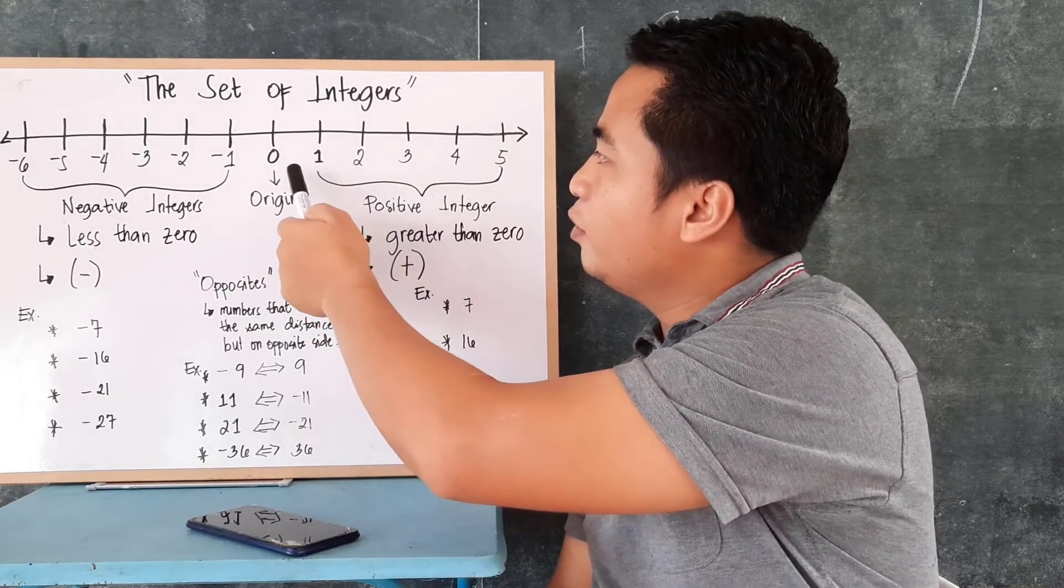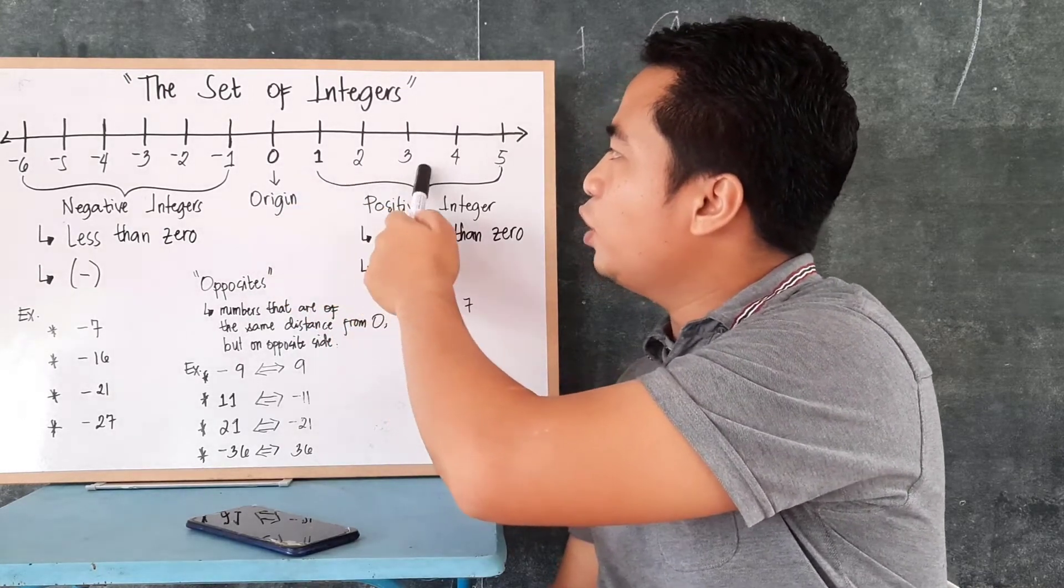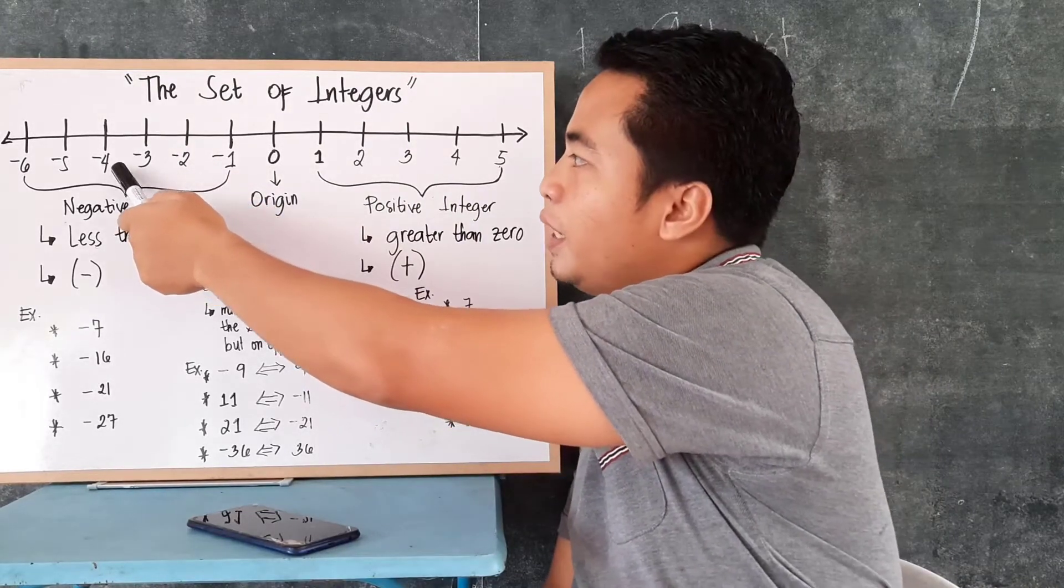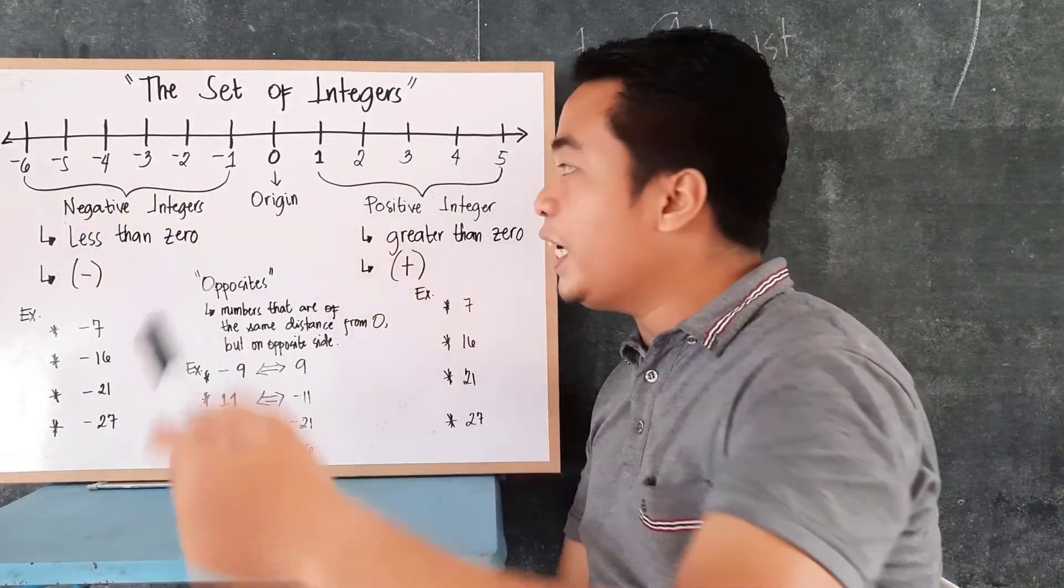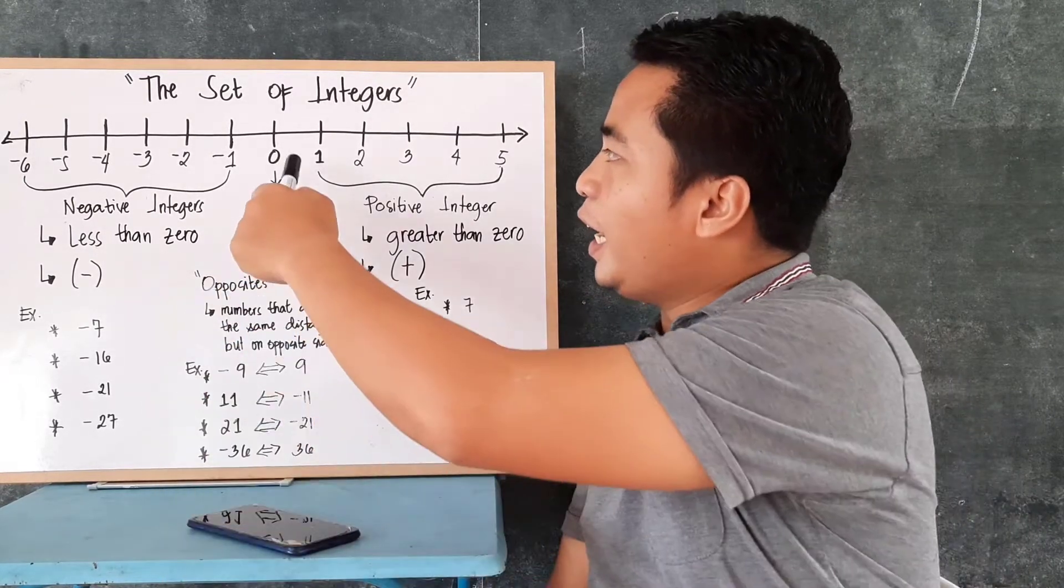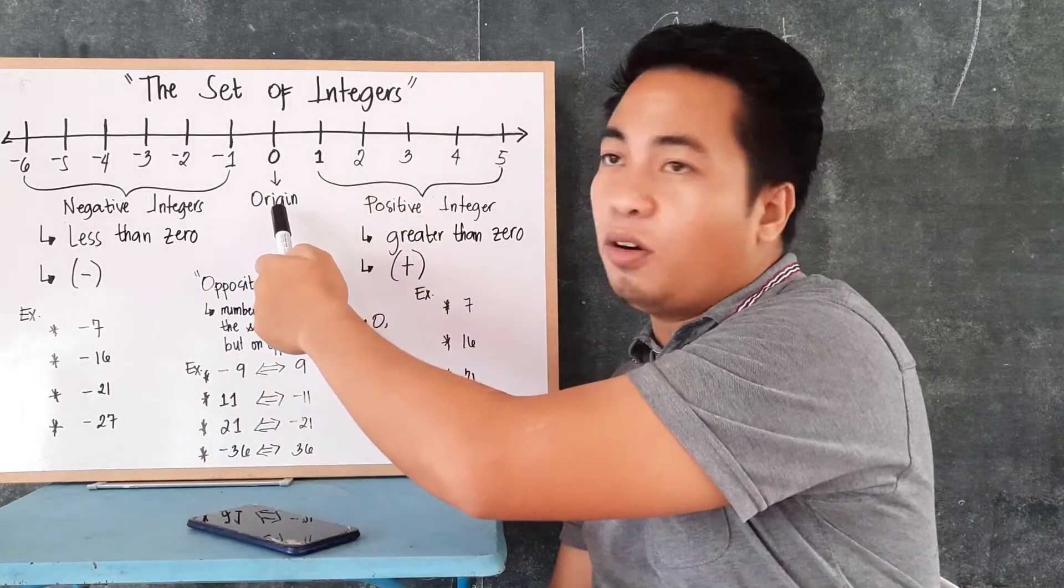We have 0, 1, 2, 3, 4, 5, and we have negative 1, negative 2, negative 3, negative 4, negative 5, negative 6. Now, the 0 in here, it is the origin.